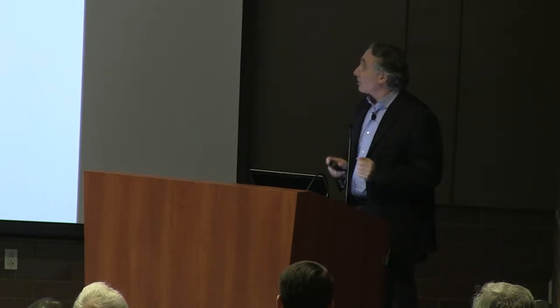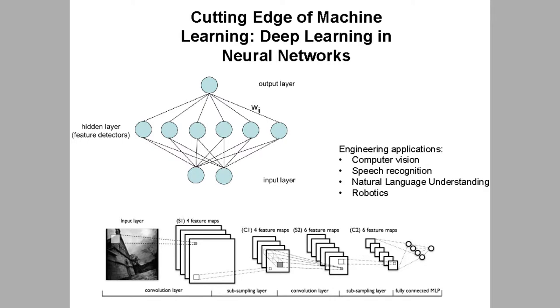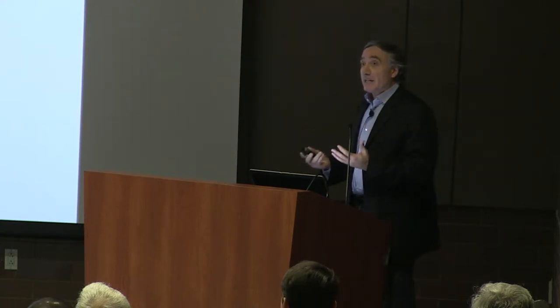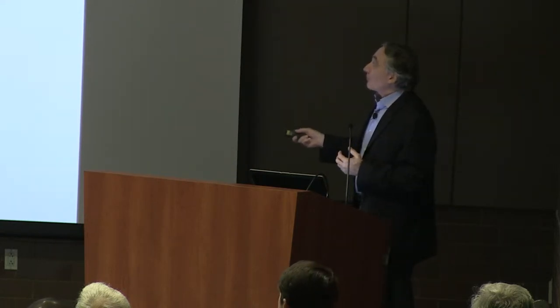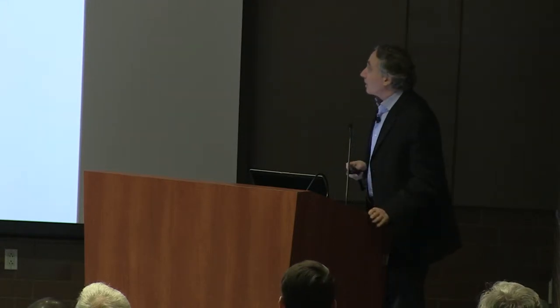The cutting edge of machine learning today is called deep learning. It's an old idea that goes back to the 50s or the 80s, where you use simple neural network models — networks of simple processing units connected by edges that have weights. When you change the weights, you change the input-output function of such a network. Given data, you tweak the weights to find the function in the network closest to the one you're trying to approximate, which can be done by gradient descent.